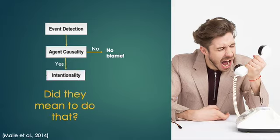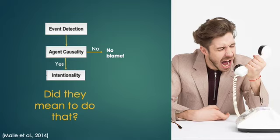If agent causality is established, the perceiver then judges whether that agent brought about the event intentionally — moving from agent causality to assessment of intentionality. In essence, this step asks: okay, they did it, but did they mean to do that? This then leads to two different information-processing paths to blame.